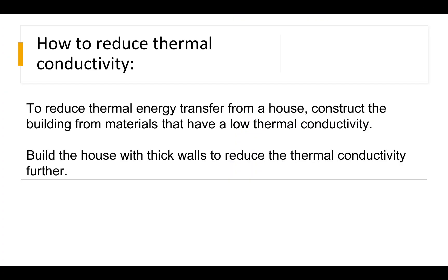To consolidate — how to reduce thermal conductivity in general. To reduce thermal energy transfer from a house, construct the building from materials that have a low thermal conductivity. When people design and build houses, they take into account not only the cost of the materials, but also the thermal conductivity. Nowadays, we try to use low thermal conductivity materials, and we can also build the house with thick walls to reduce thermal energy transfer even further.